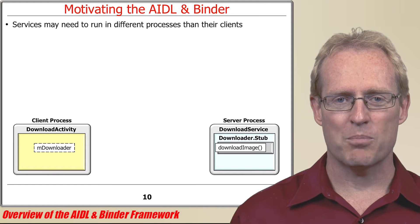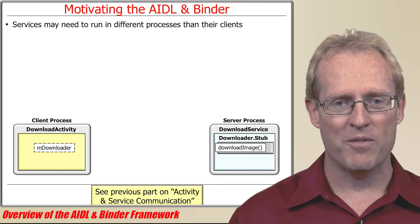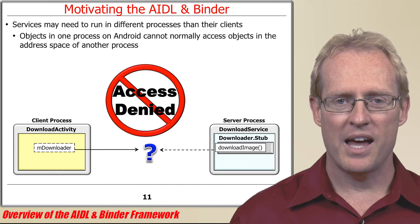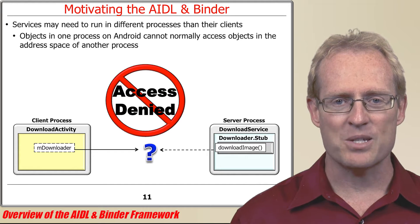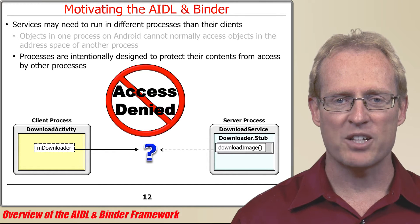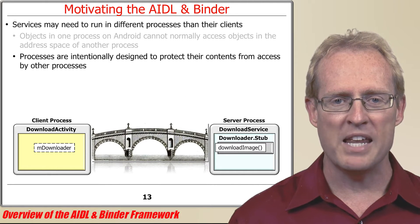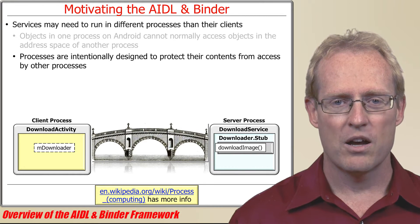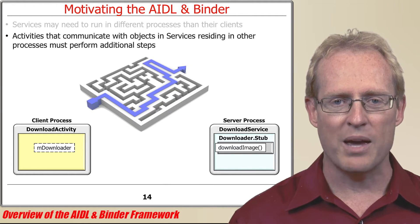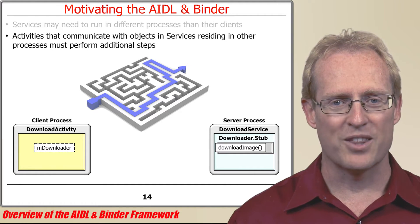Services may need to run in different processes from their clients for reasons discussed in a previous video. However, to enhance security and reliability, objects in one Android process generally can't access objects in the address space of another process. Since processes are intentionally designed to protect their contents from access by other processes, operating systems provide strictly mediated and controlled inter-process communication mechanisms. Activities in Android that communicate with objects in services residing in other processes must perform several additional steps beyond what's needed to communicate with objects in their own process.